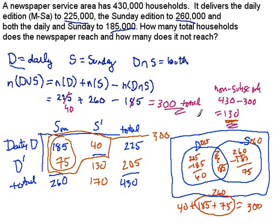How many people are non-subscribers? Well, the non-subscribers here, the outside part, that would be the 430. Take away what we found here, the 300. So there's 130 going to be in this section of the Venn diagram.